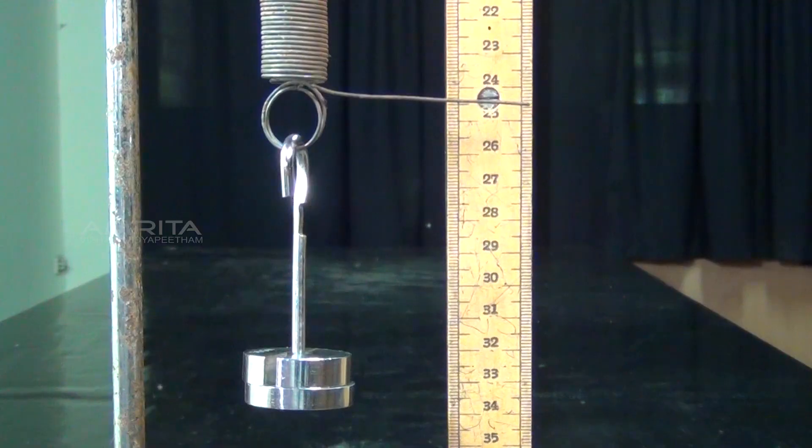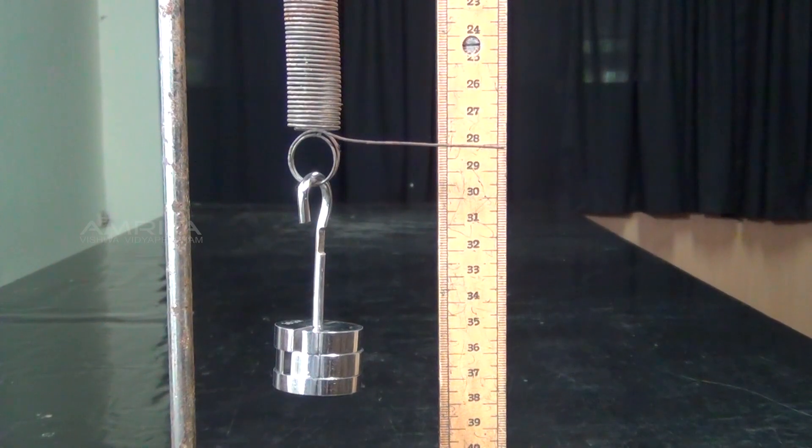Slotted weights are added one by one to the weight hanger each time noting the scale readings.